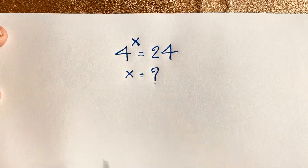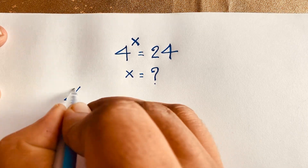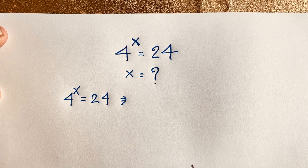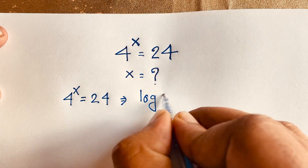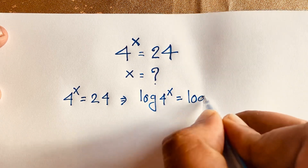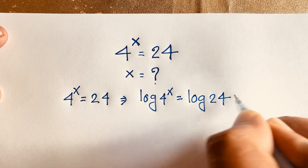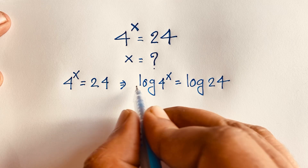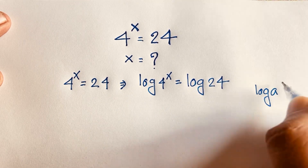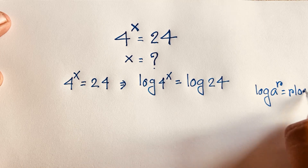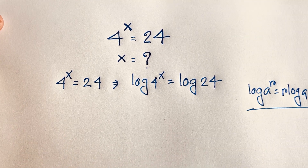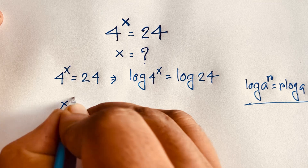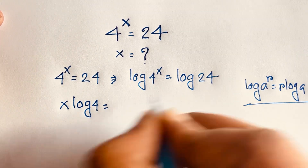So first of all, I take our question. It will be 4 to the power of x is equal to 24. Then, I use both sides natural log. So, log 4 to the power of x is equal to log 24. Then, according to logarithm rules, I can bring this x to the front. Because log a to the power of r equals r log a. According to this law, the exponent moves in front. So it will be x log 4 is equal to log 24.